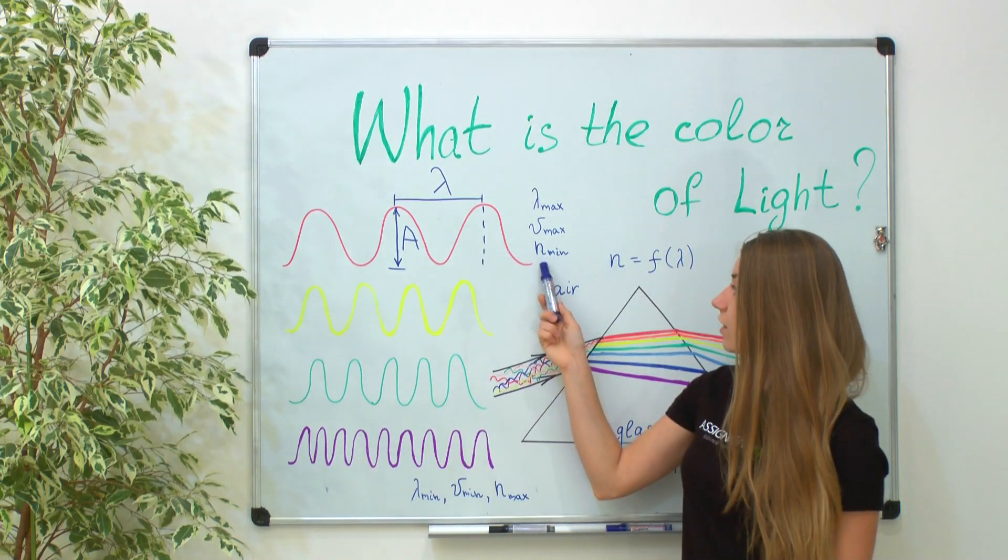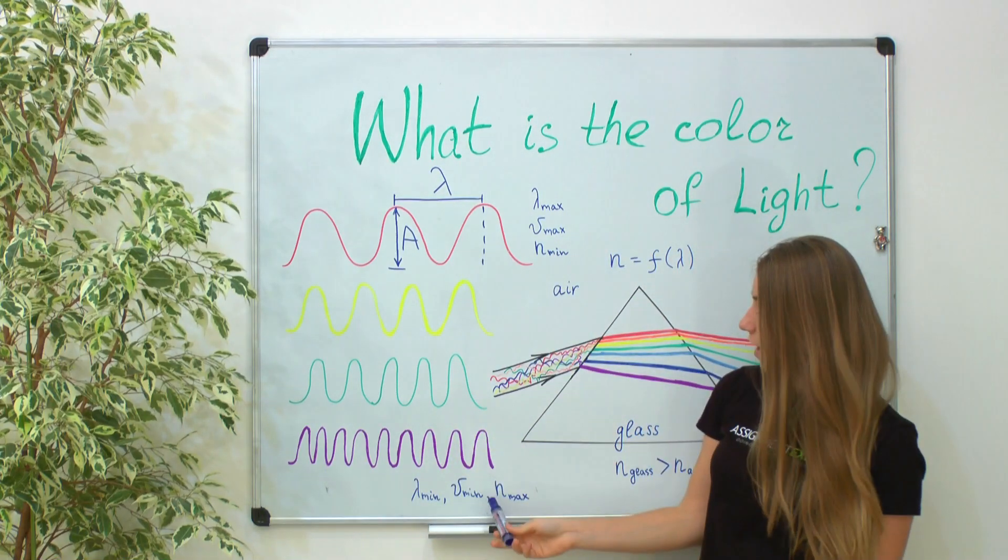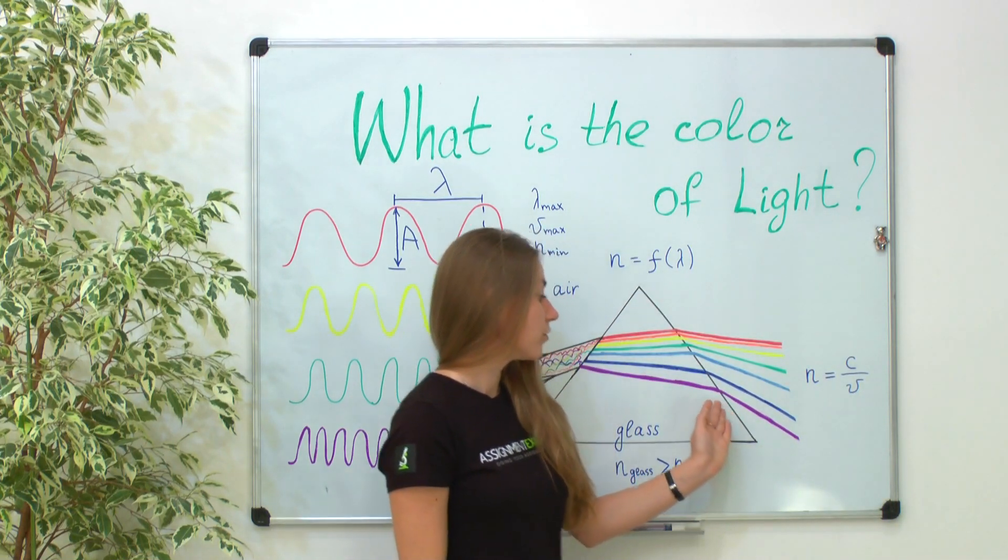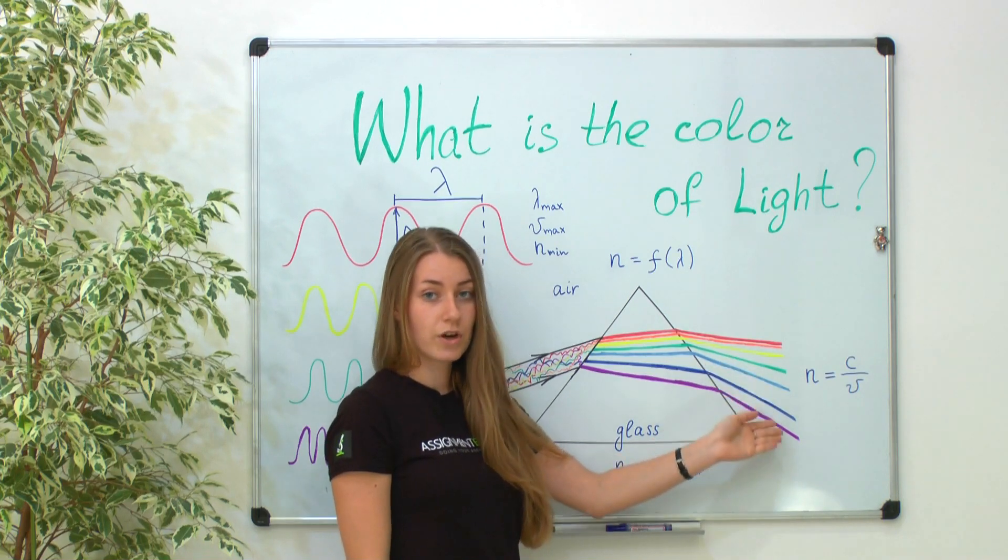So according to our formula, the refraction index for the red color will be the smallest, and for violet the biggest. It means that violet color will be refracted more strongly than red color.